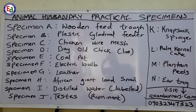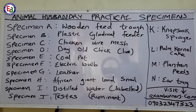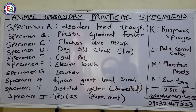We will be starting with Specimen A: wooden feed trough. Specimen B: plastic cylindrical feeder. Specimen C: chicken wire mesh. Specimen D: day-old chick (alive). Specimen E: coal pot. Specimen F: electric bulb. Specimen G: leather. Specimen H: African giant land snail. Specimen I: distilled water — your teacher will label that in examination order. Specimen J: testis of a ruminant animal. Specimen K: knapsack sprayer. Specimen L: palm kernel cake. Specimen M: plantain peel. We are going to discuss each specimen one after the other in detail, covering vital points for each.